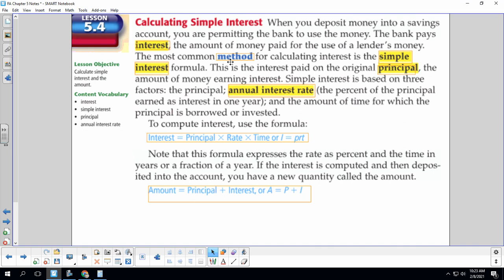The most common method for calculating interest is the simple interest formula. This is the interest paid on the original principal, the amount of money earning interest. Simple interest is based on three factors: the principal, the annual interest rate, and the amount of time for which the principal is borrowed or invested. Here is the formula for simple interest: Interest equals principal times rate times time, or I equals PRT.